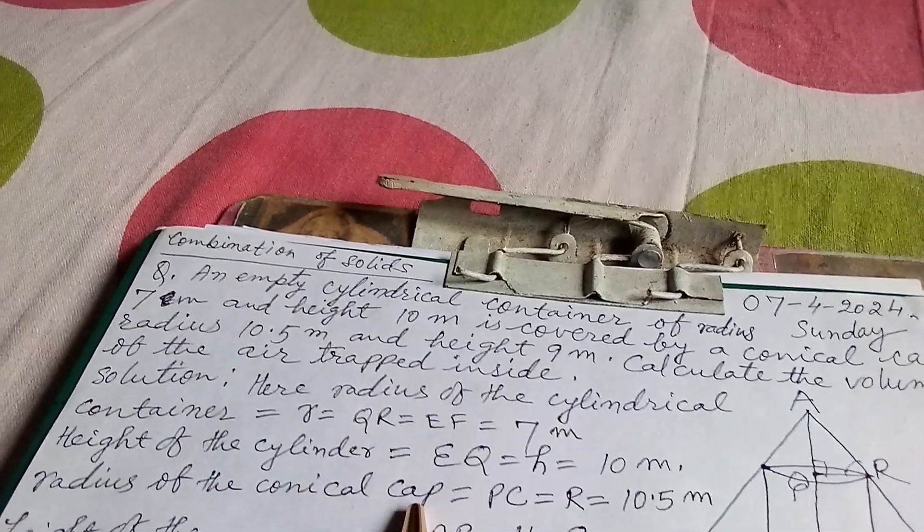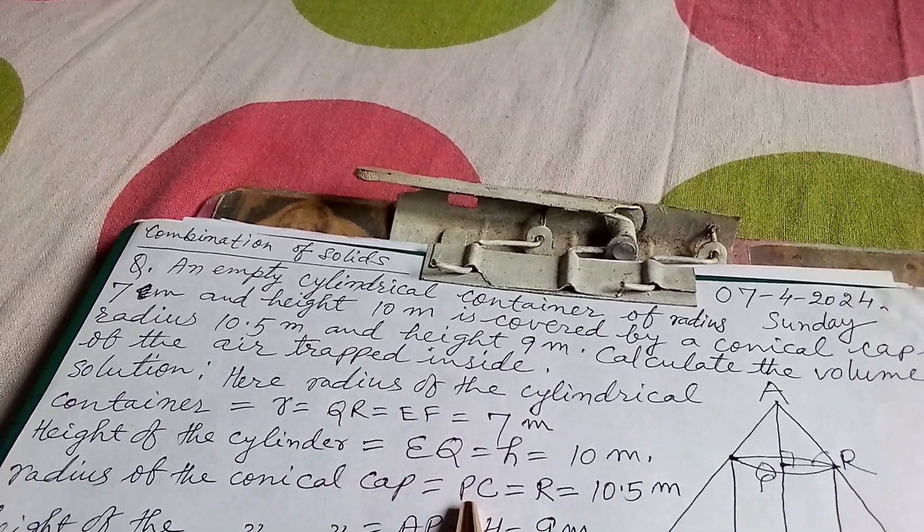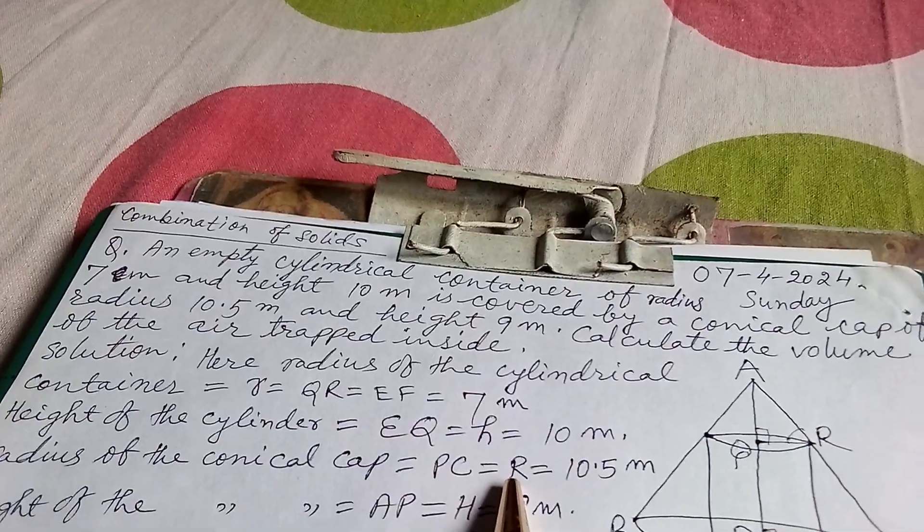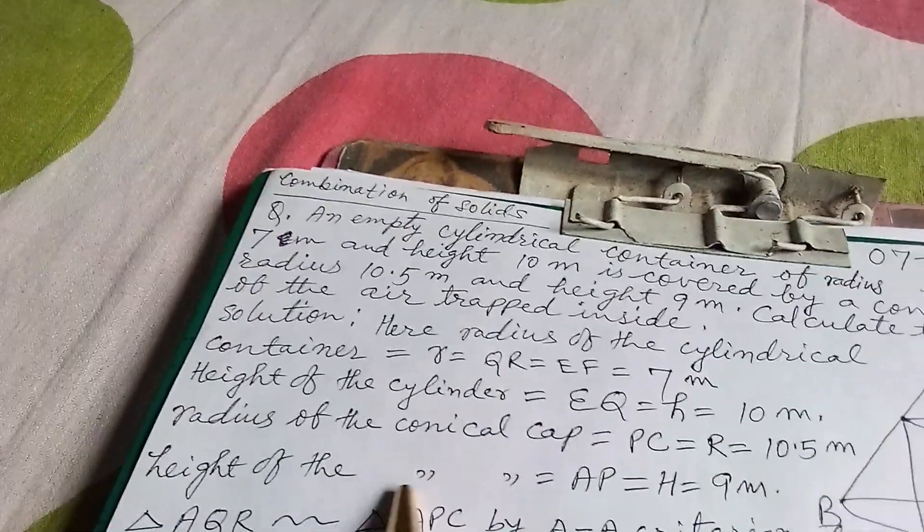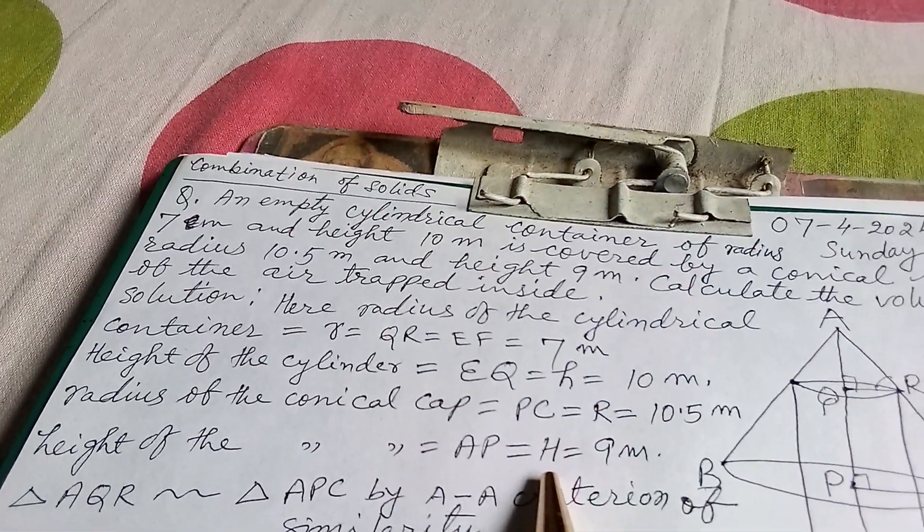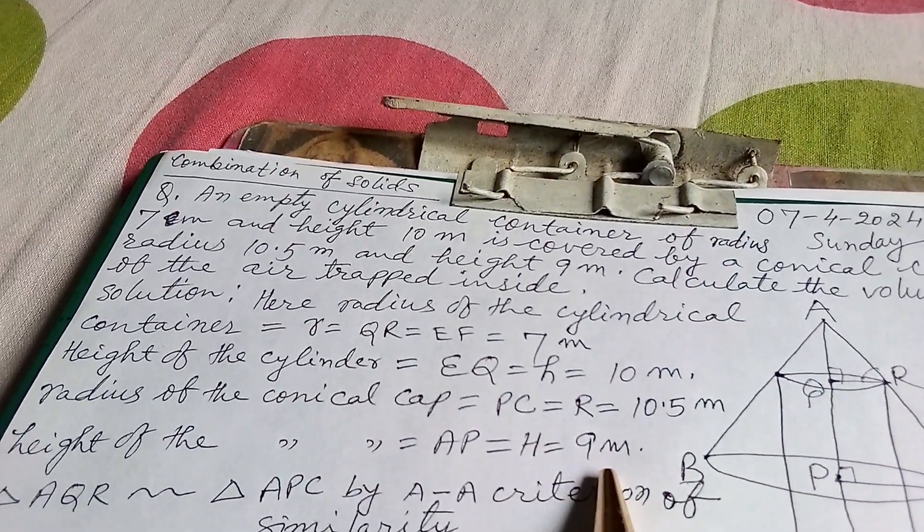Radius of the conical cap equals PC, that is capital R equals 10.5 meter, and height of the conical cap AP equals capital H, that is 9 meter.